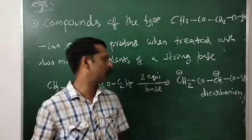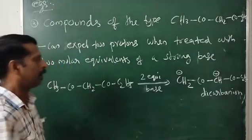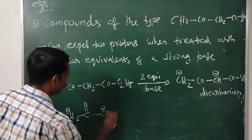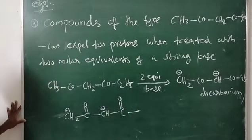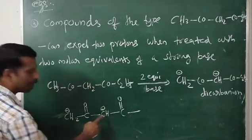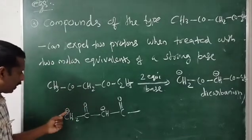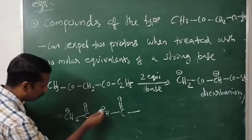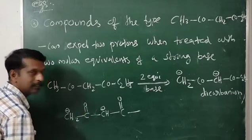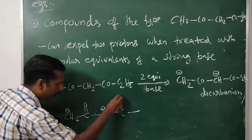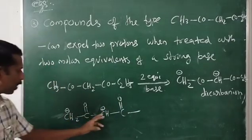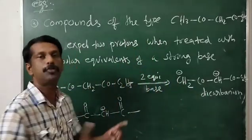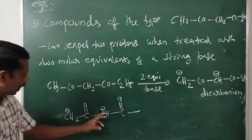The compound expels two protons to form a dianion. The actual structure is ⁻CH₂-CO-CH⁻-CO. You can see that two different carbon atoms can attack the substrate molecule because both carry a negative charge. Furthermore, by resonance, the negative charges can shift onto the oxygen atoms, meaning two carbon atoms and two oxygen atoms can all attack the substrate molecule — four different sites within the same nucleophile.